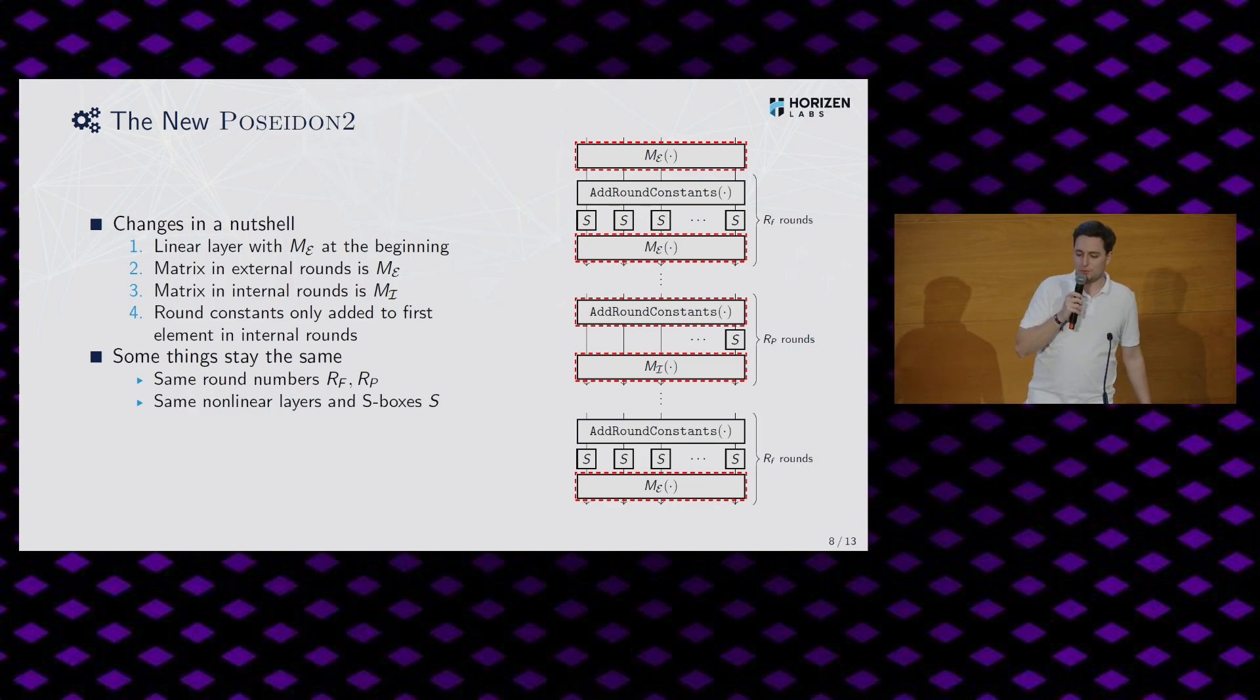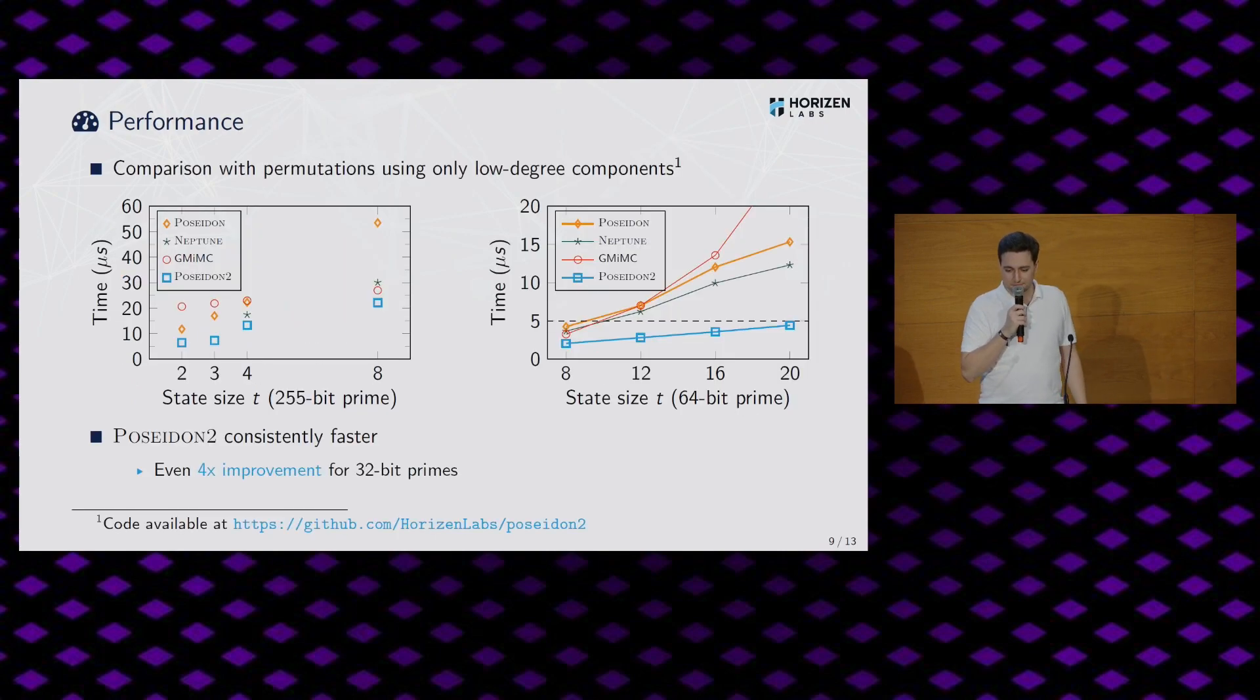OK. So in a nutshell, what are the changes? Well, we add this linear layer at the beginning, the ME one. Then we exchange all the matrices for the full rounds and also the partial rounds. So two different matrices in total. And we do the round constants more efficiently in the partial rounds. However, some things stay the same. And that's the nice thing, actually. So you can use the same round number both for Poseidon and for Poseidon 2, which means essentially that you can use the round number script of Poseidon 1. You get some output for the round numbers. And you can use them also for Poseidon 2. So they're the same. And there are also the nonlinear layers and the S-boxes and these GCD conditions. This is all the same as the original Poseidon.